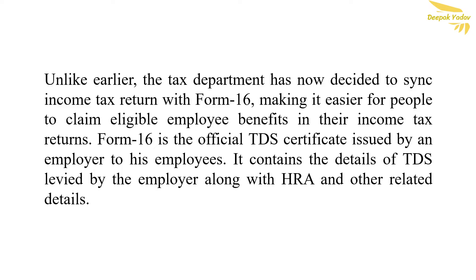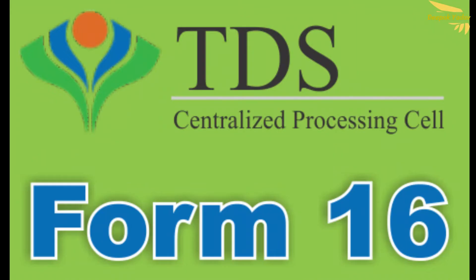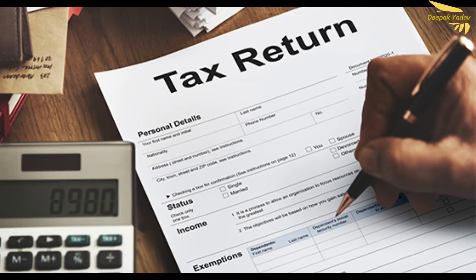Unlike earlier, the tax department has now decided to sync income tax returns with Form 16, making it easier for people to claim eligible employee benefits in their income tax returns. Form 16 is the official TDS certificate issued by an employer to his employees. It contains the details of TDS deducted by the employer along with HRA and other related details.